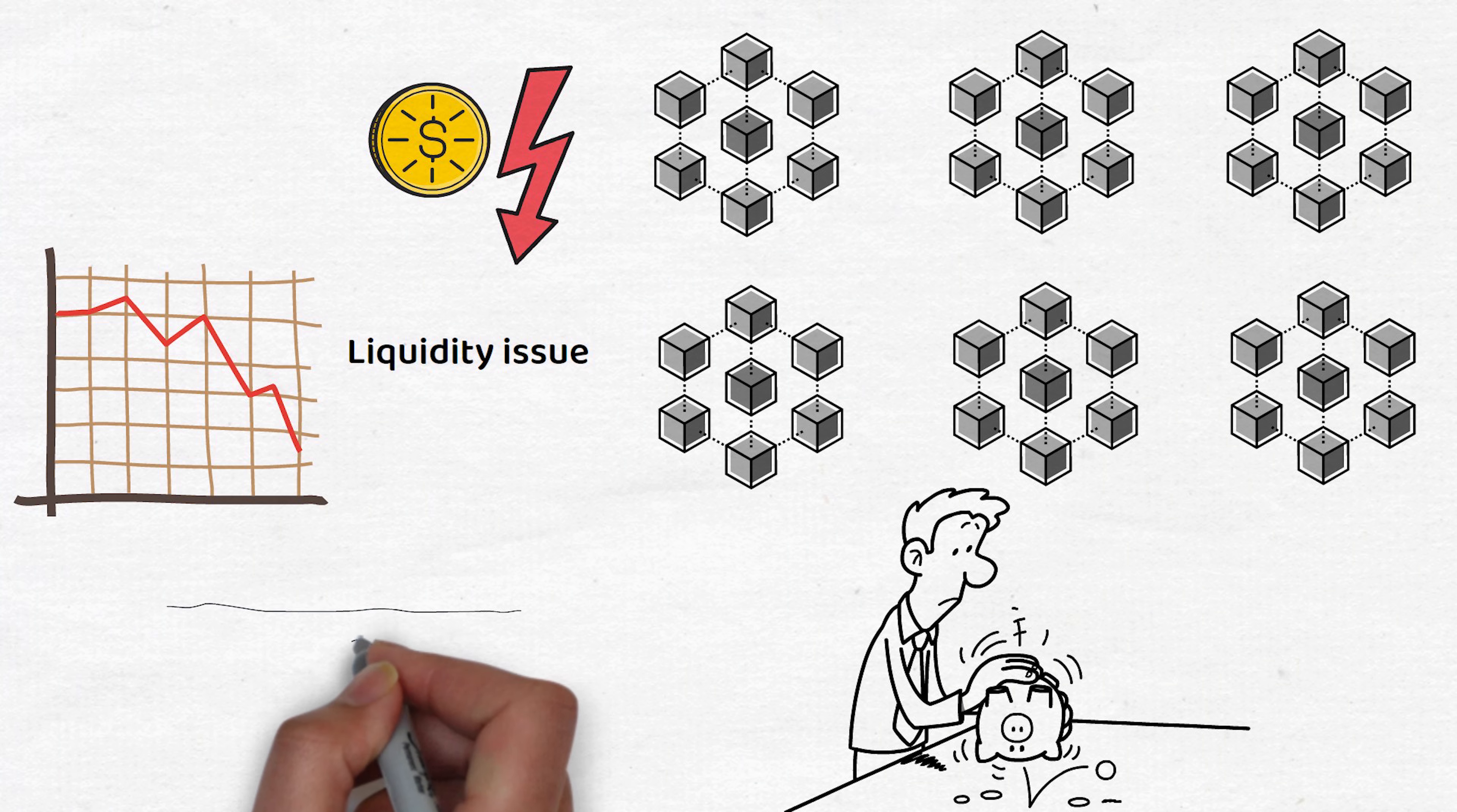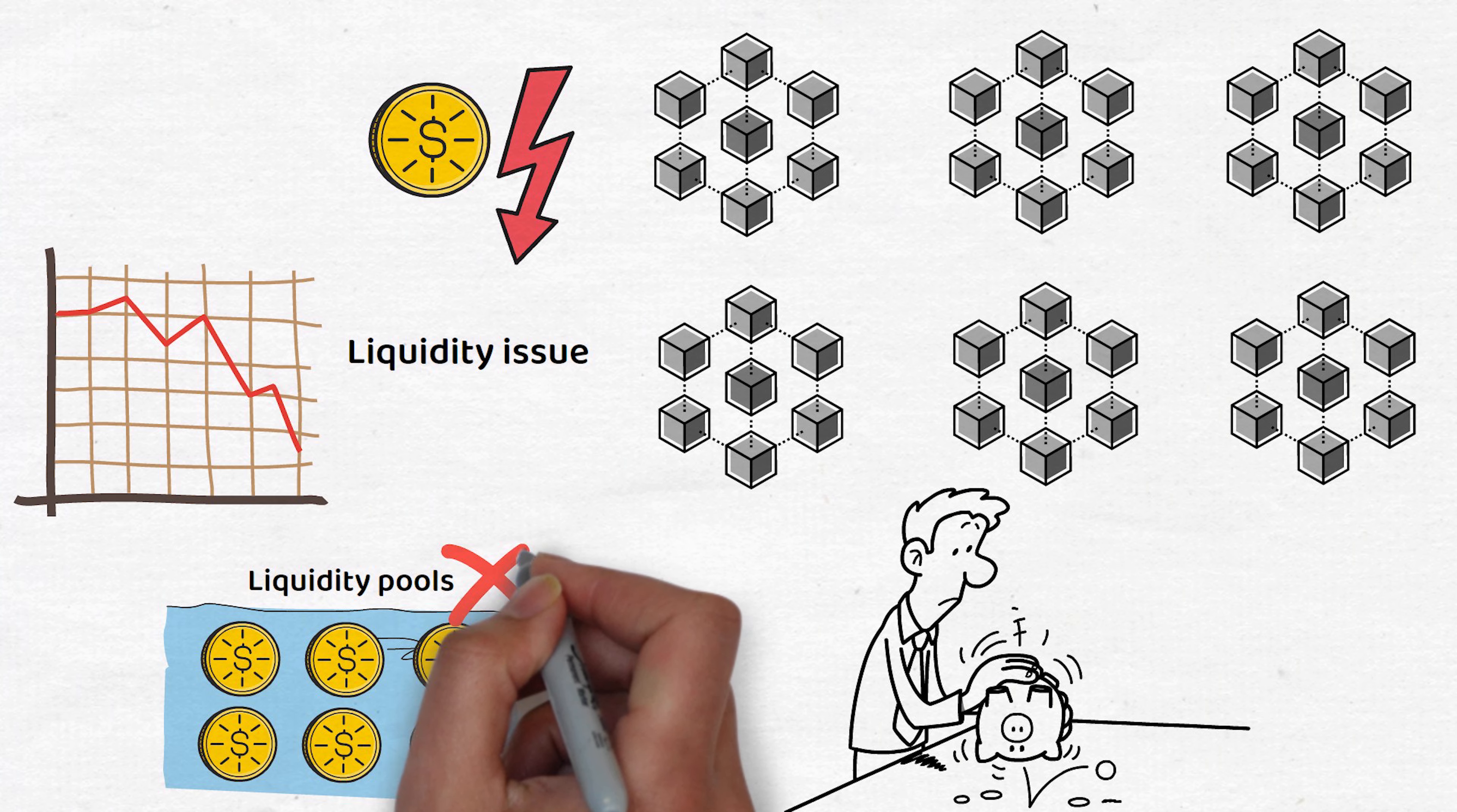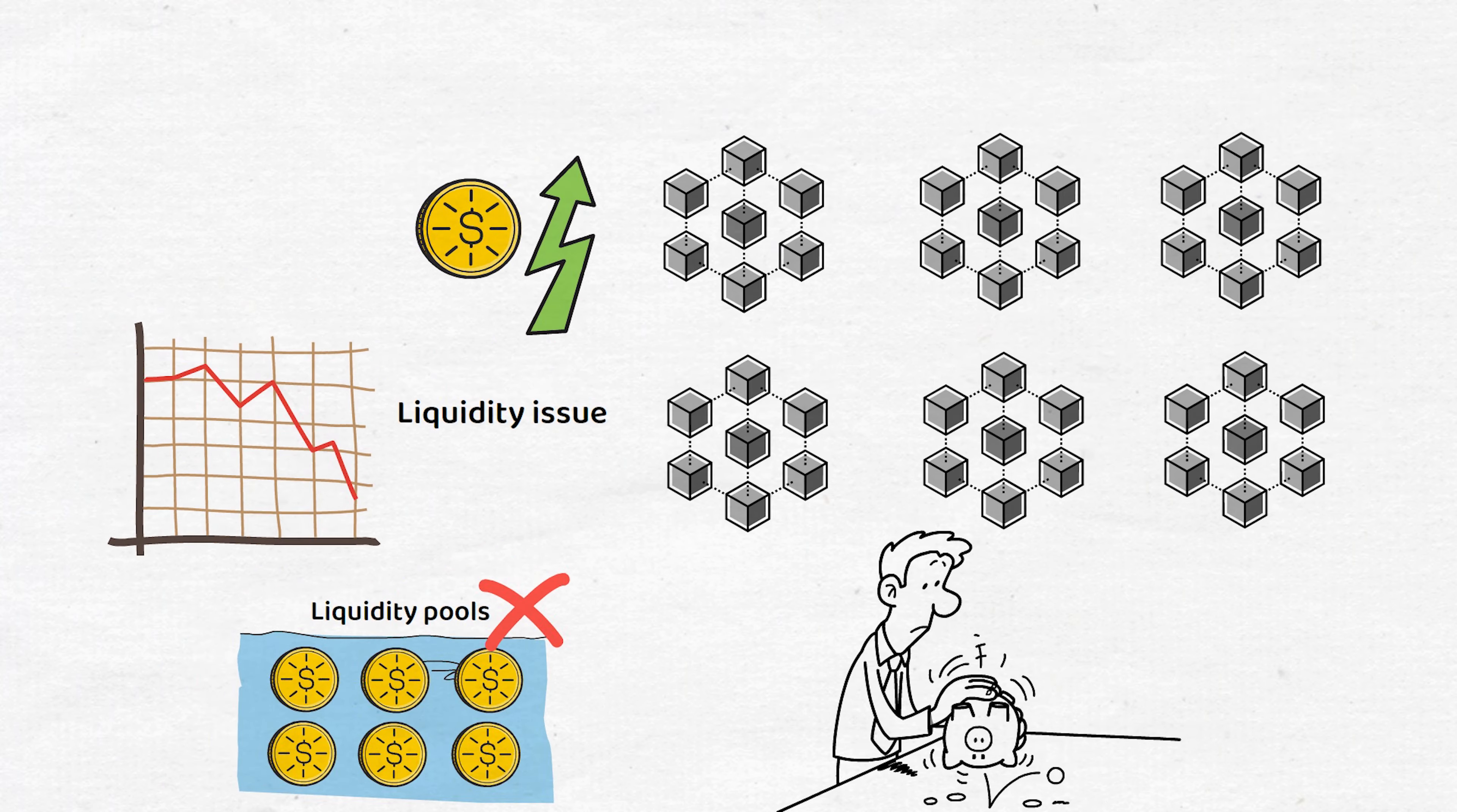By working on solutions that do not require liquidity pools to work cross-chain, Wormhole is really attempting to push the boat out and could eventually end up saving older blockchains long after most of their users have placed their funds elsewhere.